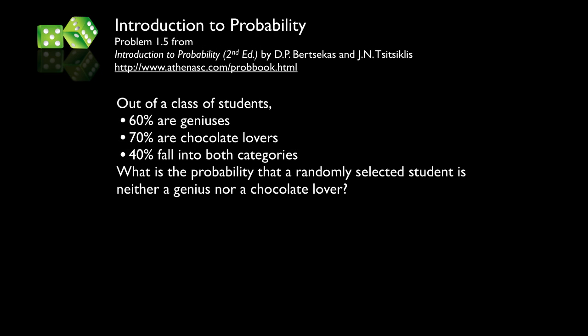For our first problem, we're going to look at a situation where we have a class of students, and within that class we know three things: 60% of them are geniuses, 70% are chocolate lovers, and 40% fall into both categories — that is, they're both a genius and a chocolate lover. What we'd like to determine from that information is the probability that a randomly selected student is neither a genius nor a chocolate lover.